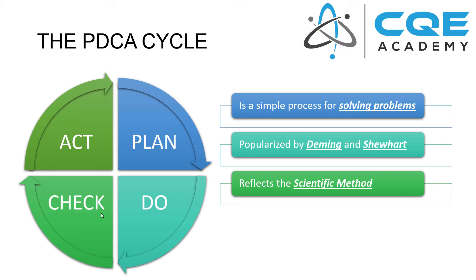In reality, it's really just a reflection of the scientific method. While Deming popularized it and Shewhart really put a name to it, it's really simply the scientific method in action. We start by planning an experiment to test a hypothesis, we execute that experiment, we study the results of that experiment, and then we take whatever information we learn and form new hypotheses. This process for solving problems isn't anything new — it's simply the scientific method.